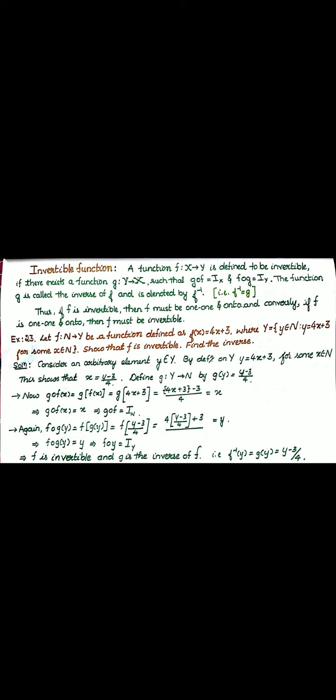Since both composition functions are proven to be identity functions, the inverse exists. Therefore f is invertible and g is called the inverse of f. That is f inverse of y equals g of y equals y minus 3 divided by 4. If the question asks for f inverse of x, replace y by x to get f inverse of x equals x minus 3 divided by 4.